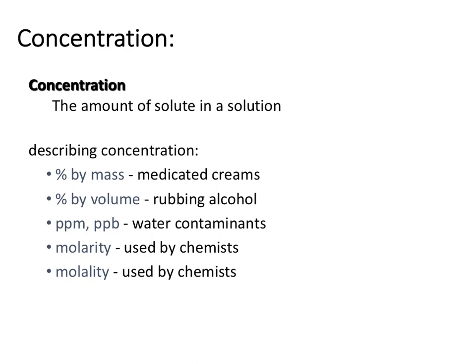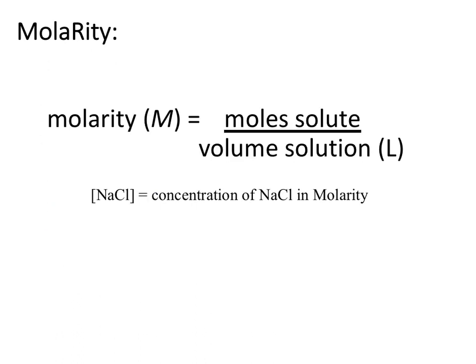Percent by volume - rubbing alcohol comes in 70% or 90%, which is the percent of the volume that is actually the rubbing alcohol. Parts per million and parts per billion refer to water contaminants. Molarity and molality are the two we're going to be focusing on today - they're the most commonly used by chemists.